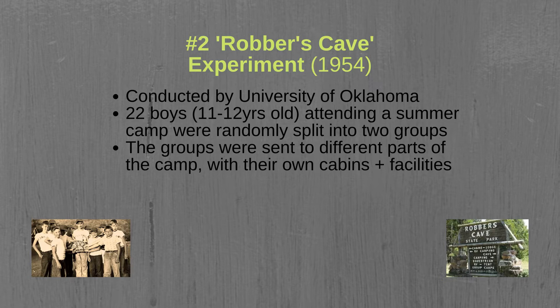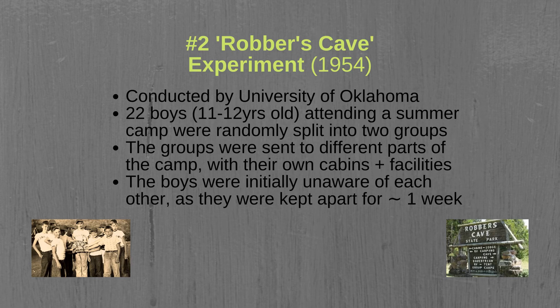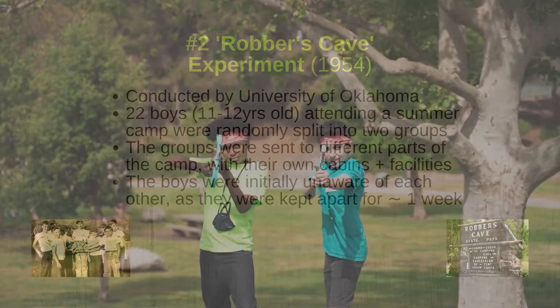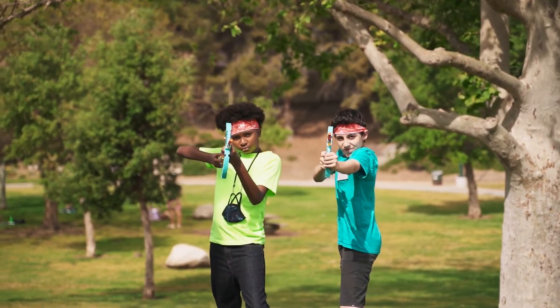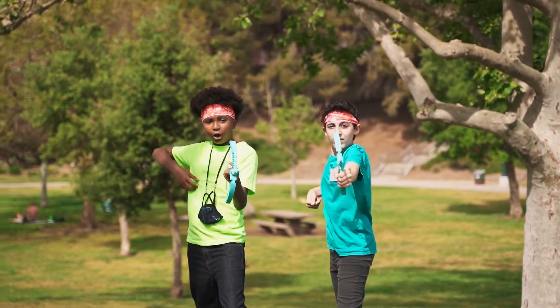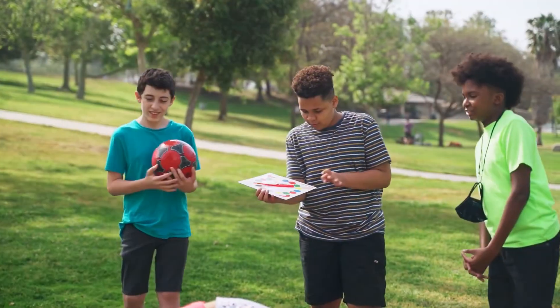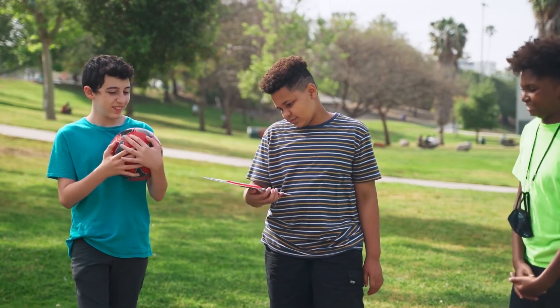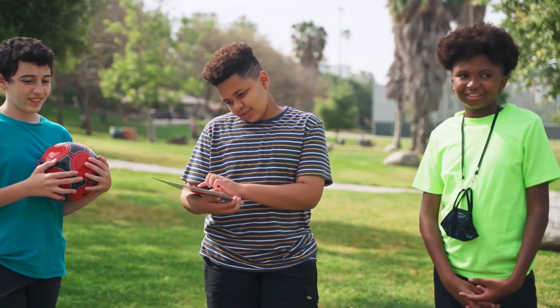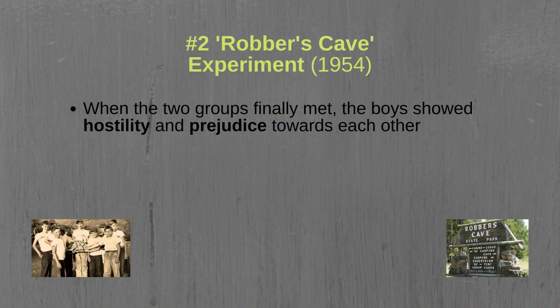The groups were assigned prior to their arrival to the camp, and the boys were initially unaware of the other group's existence as the groups were kept apart for the first week. In the first week, the boys in each group spent most of their time doing activities together such as hiking and swimming. By doing these activities together, the boys began building strong social bonds with each other. When the two groups finally met, the boys showed signs of hostility and prejudice towards each other.